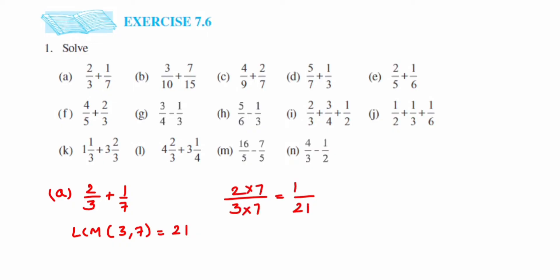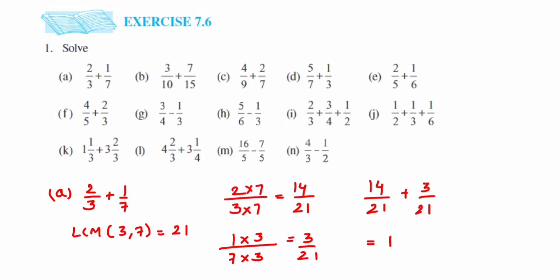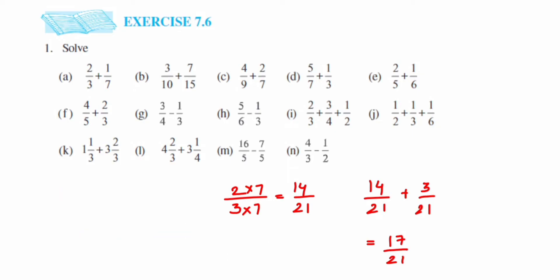I will change the denominator of each fraction and find the equivalent fraction with denominator 21. Multiplying 7 in the numerator and denominator gives 14 upon 21. Similarly, for 1 by 7, I multiply 3 to get 21, so multiply 3 in the numerator also to get 3 by 21. Now adding: 14 plus 3 by 21. Since denominators are the same, just add the numerators: 14 plus 3 is 17, so the answer is 17 upon 21.